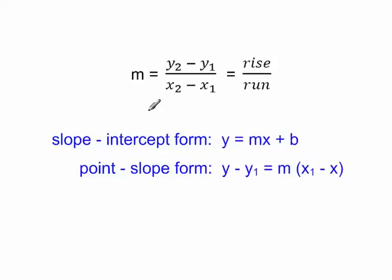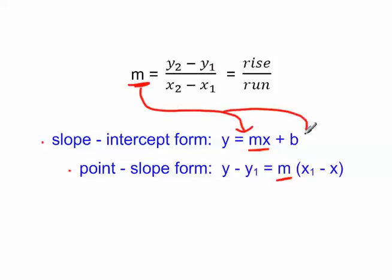Let's talk about slope and why you need to know it. Specifically in algebra, there are two equations: one's called the slope intercept form, another one's called point slope form, where they use the letter M every single time. That letter M is the same M I mentioned on the previous slide. Every line has a slope of some sort, and when it comes to algebra, you really need to know what the slope is to solve the problems — otherwise you can't do it.